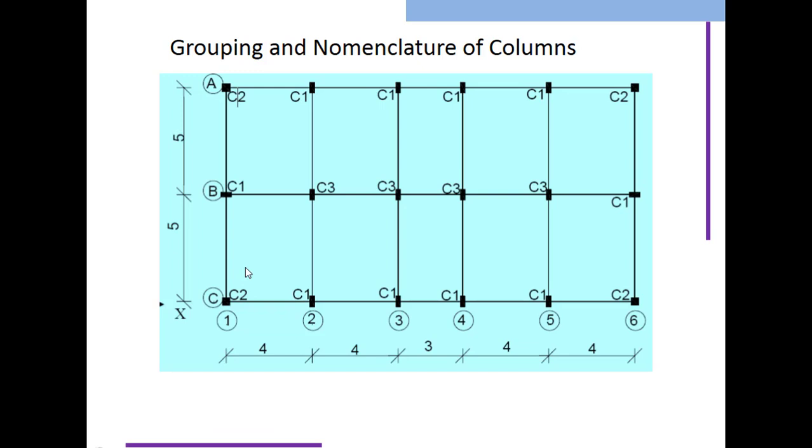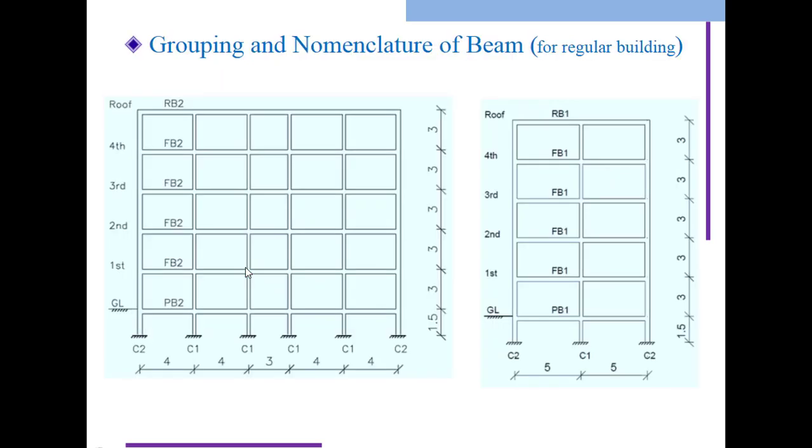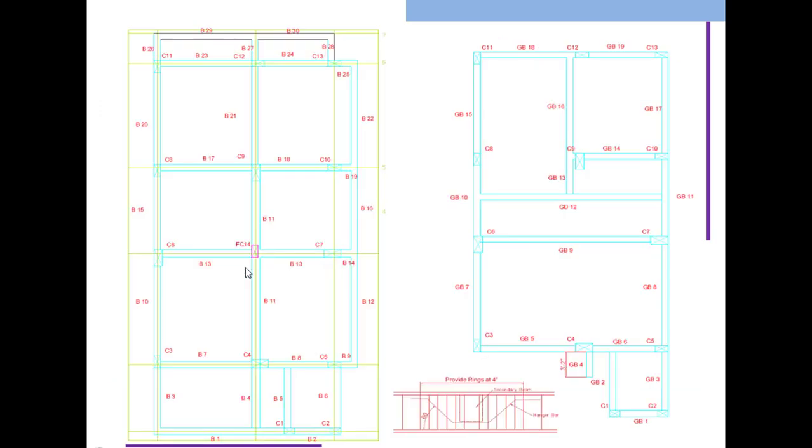The grouping and nomenclature of columns - it's very important when doing reinforcement detailing. You can see grouping and nomenclature of beams given by FB2, FB1, PB2 - like floor beam 1, floor beam 2, floor beam 3. This kind of reinforcement we'll get at the end of analysis and design. We will get to know what exactly we are doing.